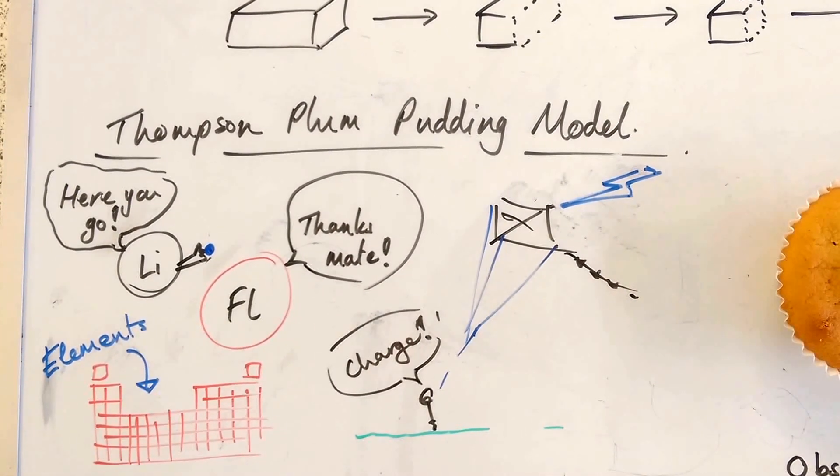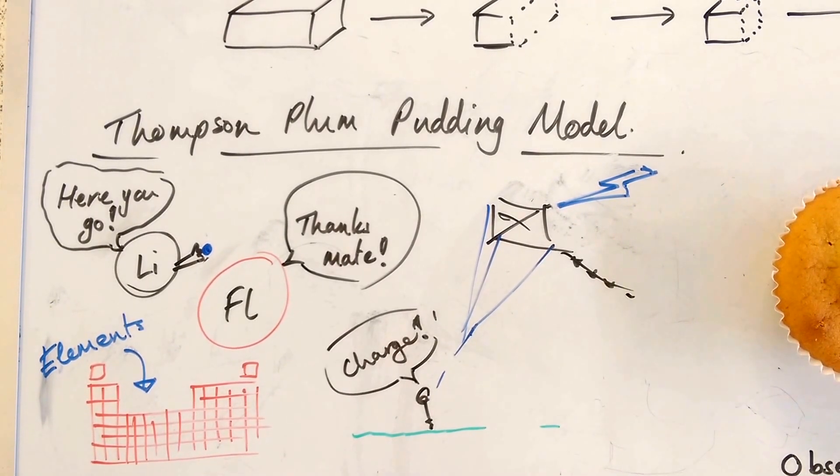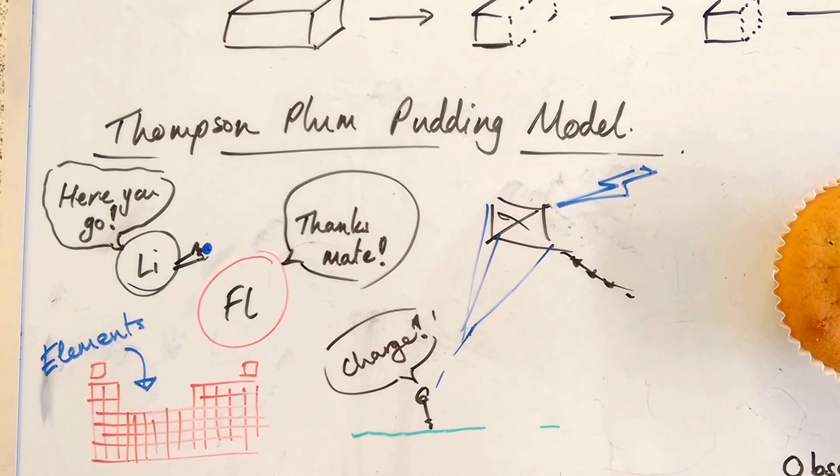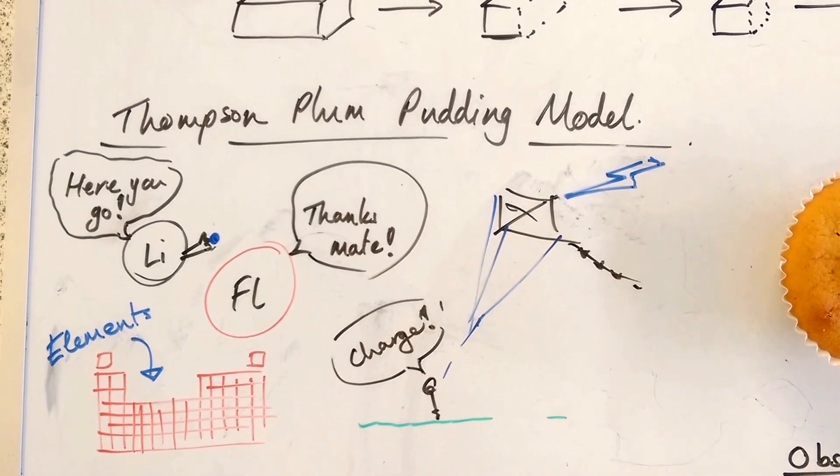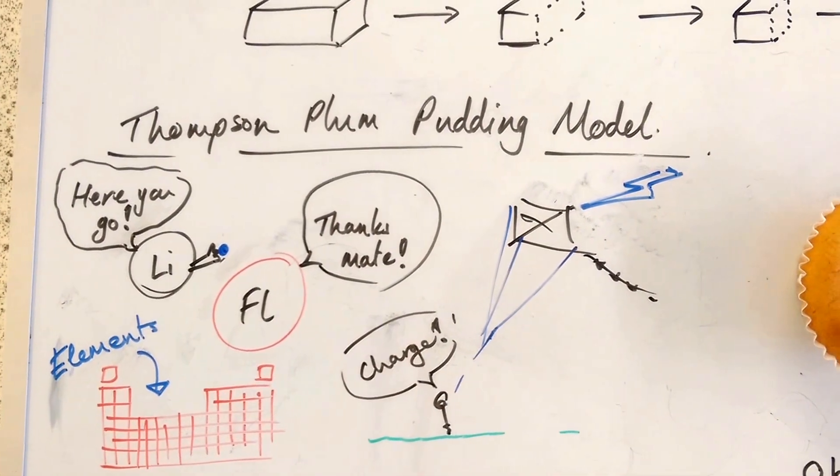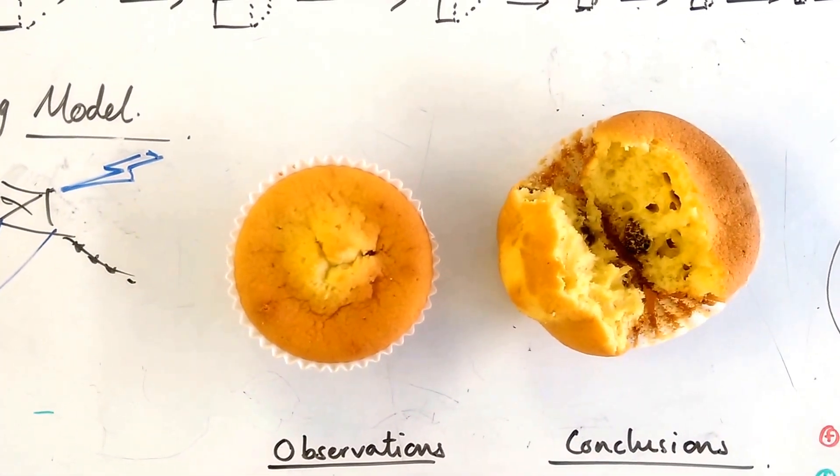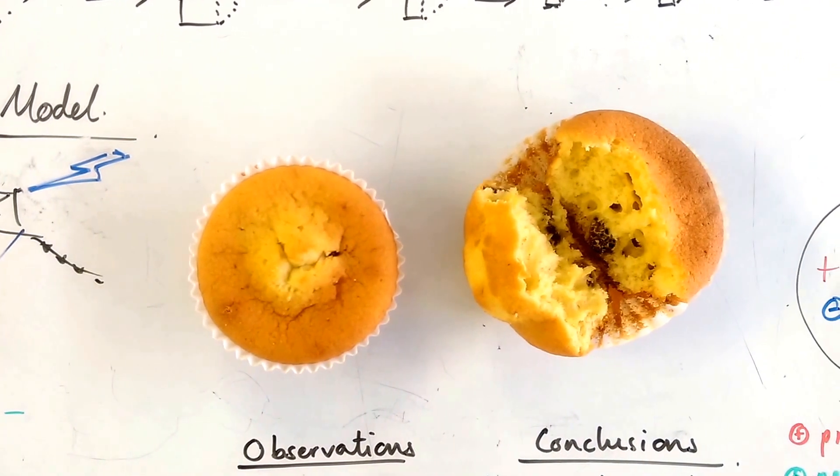So to explain these two phenomena, chemical bonding and electricity, Thompson came up with the plum pudding model. That is to say that atoms could be thought of as like a plum pudding. A plum pudding is a cake. It's a cake which has raisins in it.